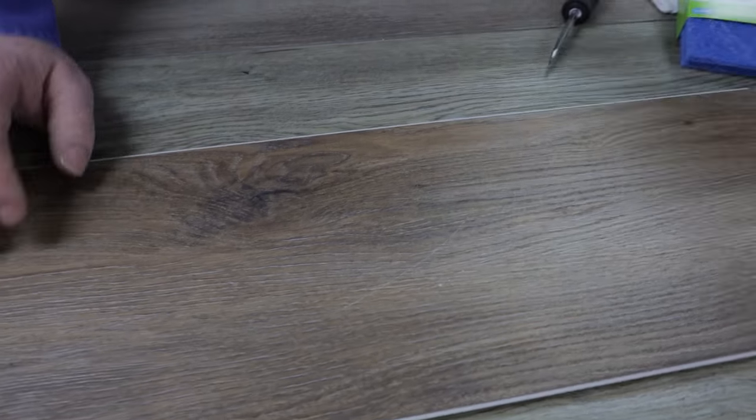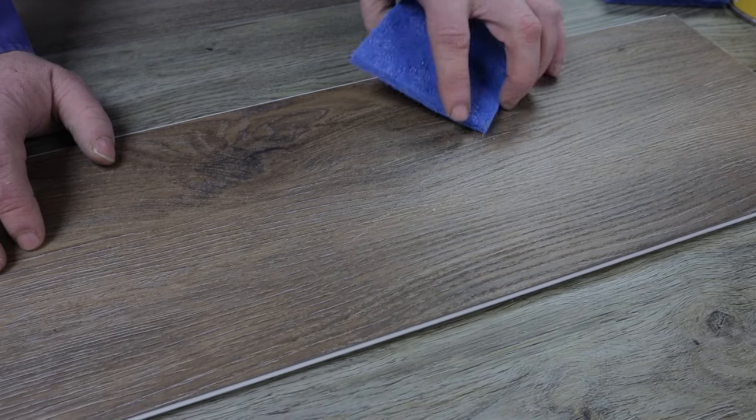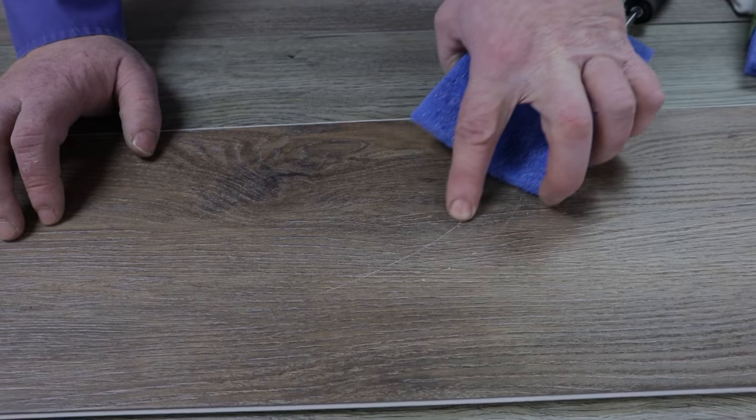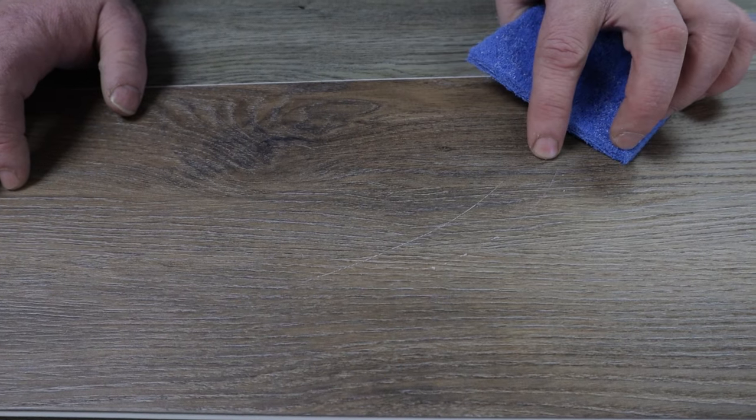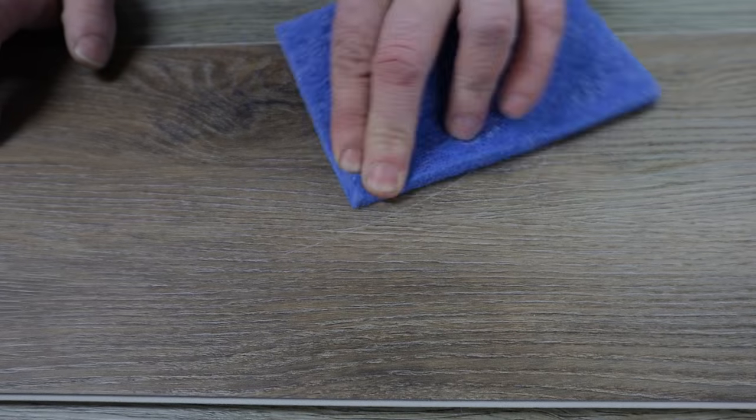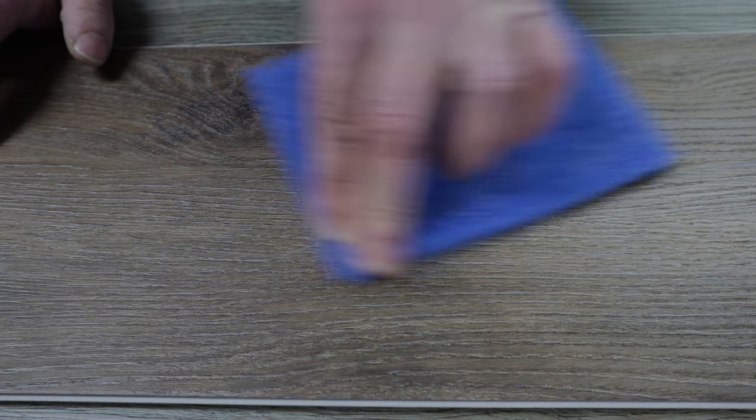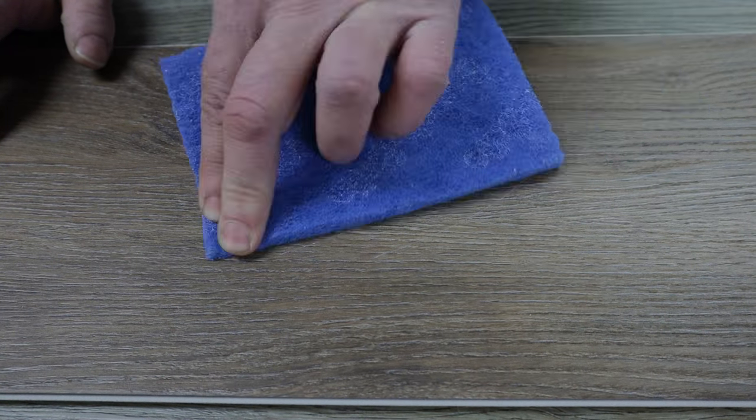Once the scratches occur, get out the blue Scotch-Brite. What you're doing is taking off the roughness, which is also the burrs that were created by the scratch. You're going to do a light rub over top of both of these scratches.